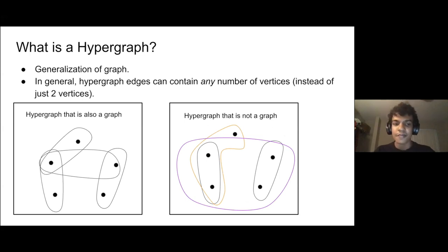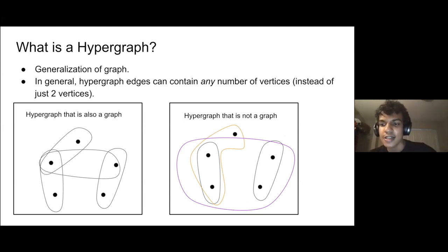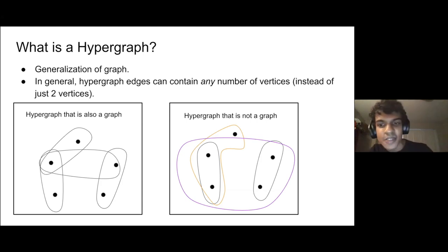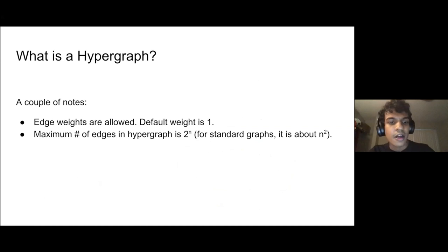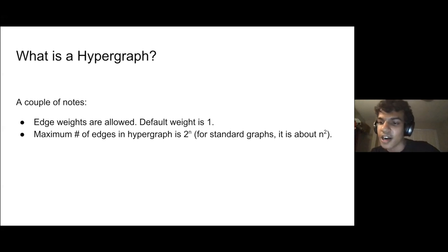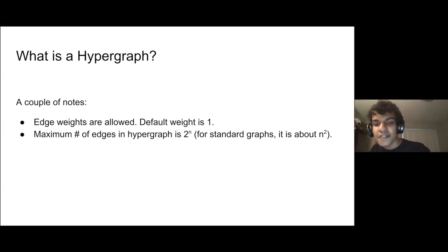A hypergraph is a generalization of a graph. Every graph is also a hypergraph, but there exist hypergraphs that are not graphs. We relax the condition on edges: an edge no longer has to contain just two vertices — it can contain any number of vertices. For example, there is a purple edge and an orange edge which contain four and three vertices respectively. We allow edges to have non-negative weights, and there is an important distinction: hypergraphs can have up to 2 to the n edges, because every subset of vertices can be an edge, whereas standard graphs have at most about n squared edges.